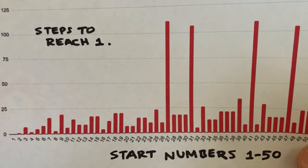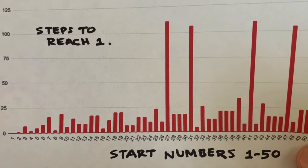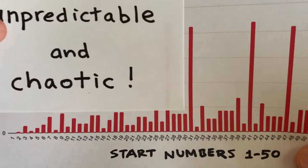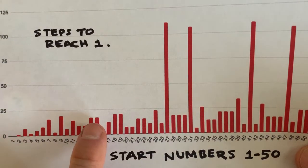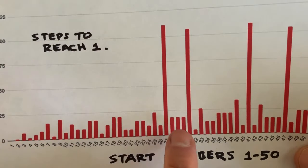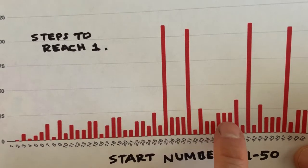But look here. Adjacent start numbers often take the same number of steps to reach 1, here and here. There's a definite pattern there, and we're going to investigate that in the next episode.